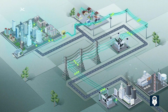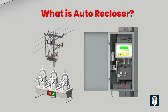An automatic recloser is a device used to automatically restore power to a distribution line after a temporary outage. It is designed to automatically detect faults and interrupt the flow of power. Once the fault is cleared, the recloser automatically turns back on and restores power. If the fault still exists, the auto recloser is locked out to protect the system.